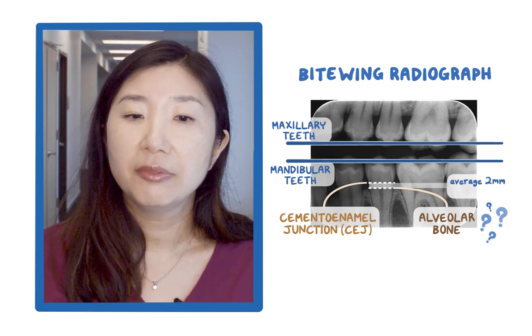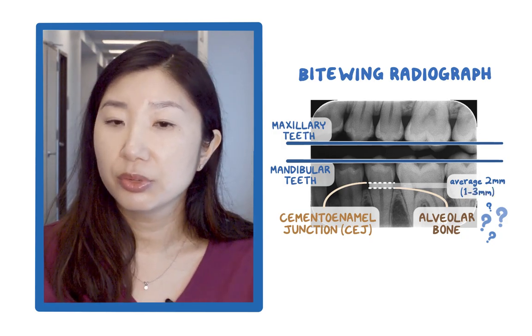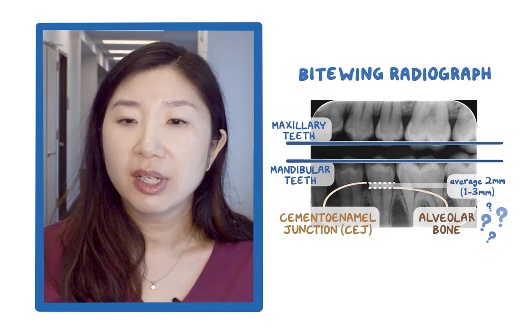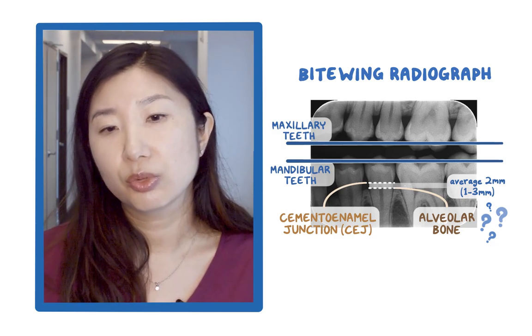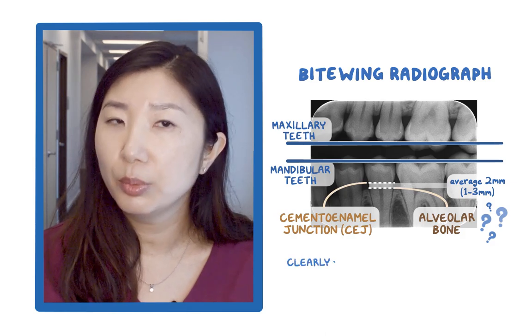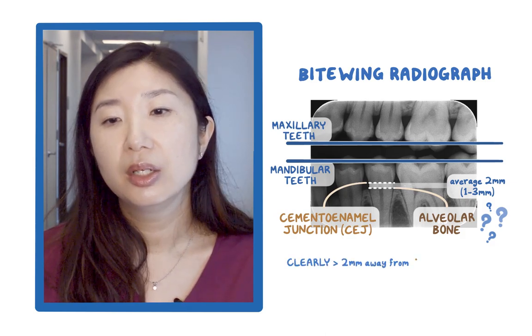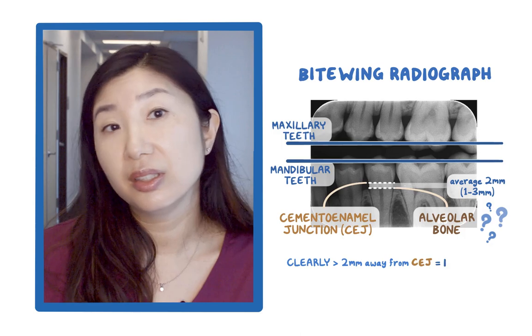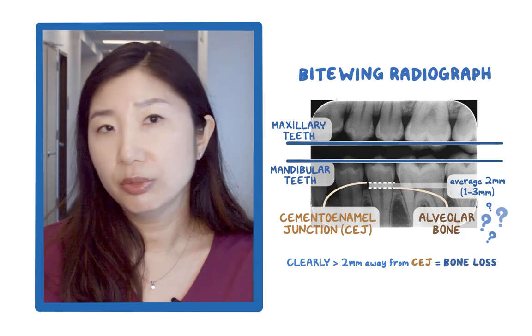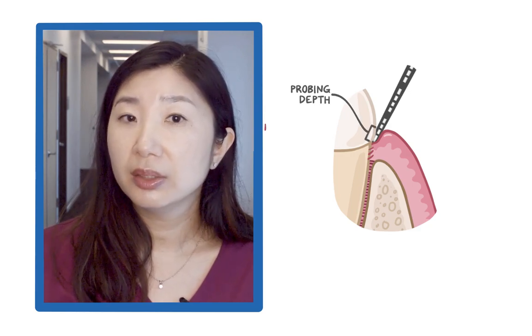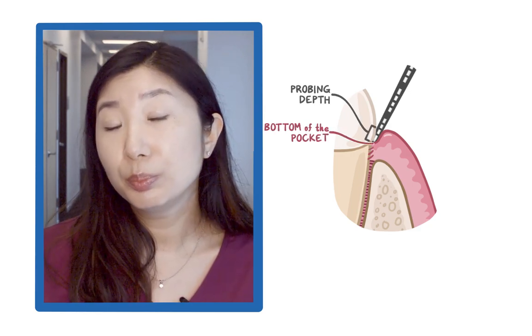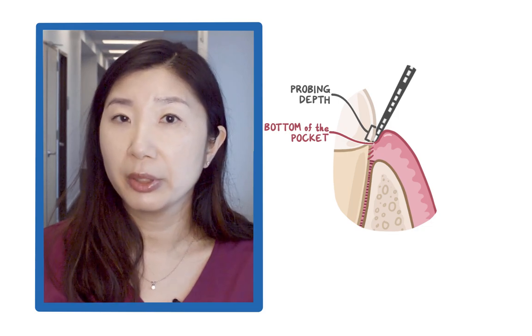This distance can vary from 1 to 3 millimeters in healthy individuals. Remember, a bitewing radiograph is a two-dimensional view of what is actually a three-dimensional structure. So the bone level has to be clearly more than 2 millimeters away from the CEJ for you to say there is bone loss. What you cannot visualize with a radiograph, you can detect clinically. You use a periodontal probe with markings not only to measure the probing depth, but also to locate the bottom of the pocket, which is the most coronal part of the periodontal attachment.